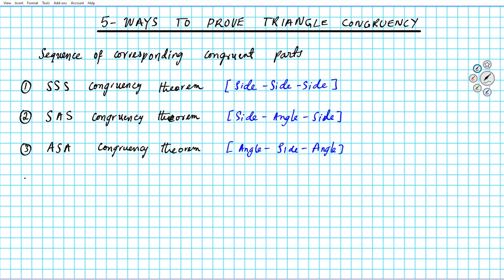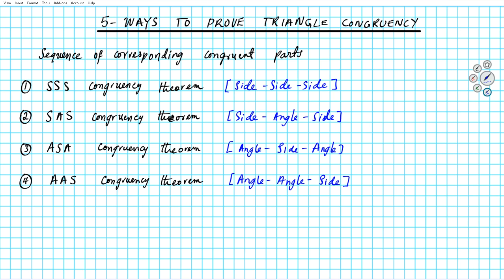Number four — the fourth way is angle angle side, the AAS congruency theorem. AAS stands for two consecutive angles and a non-included side. If you have that sequence of corresponding parts, then you can conclude that the two triangles are congruent.